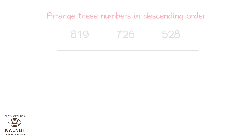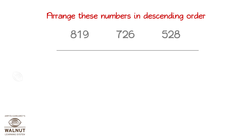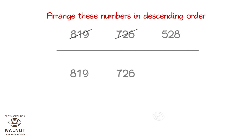Now, let us arrange these numbers in descending order. You pick the biggest number and place it first. Then the next biggest and then the last one. So, we get the numbers in descending order.